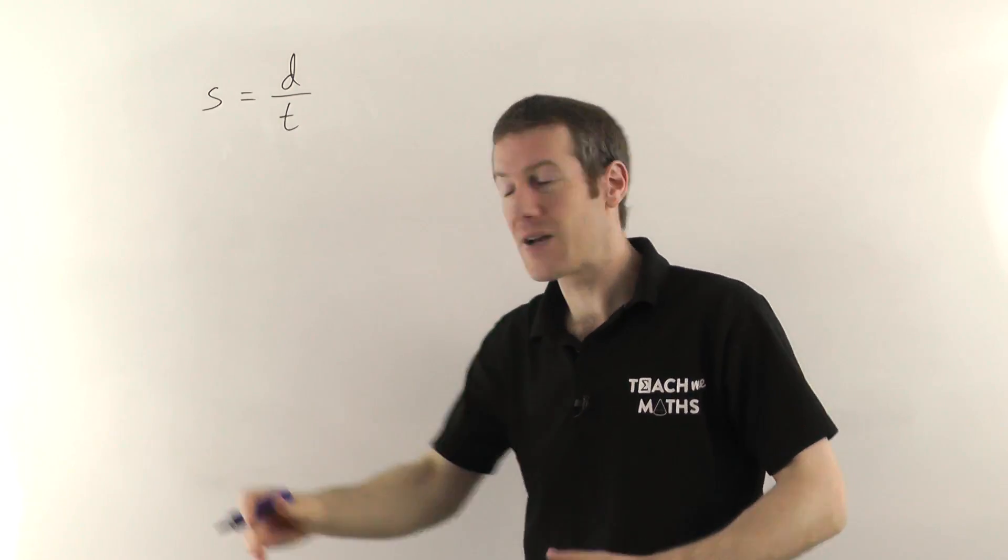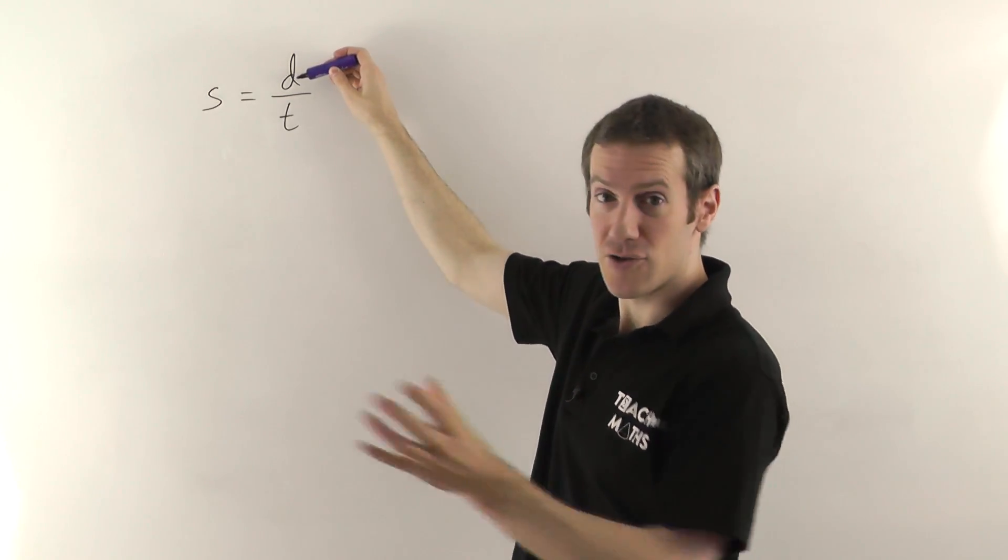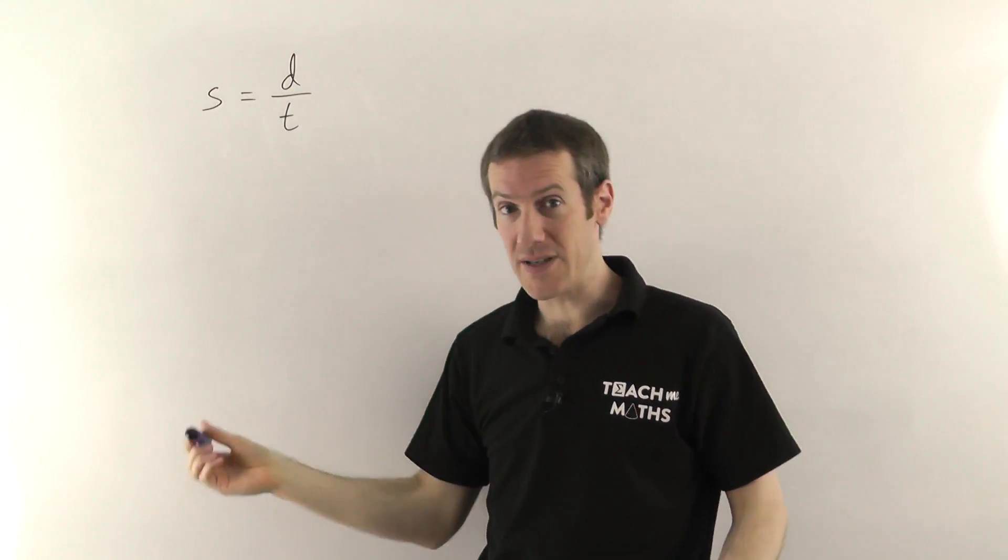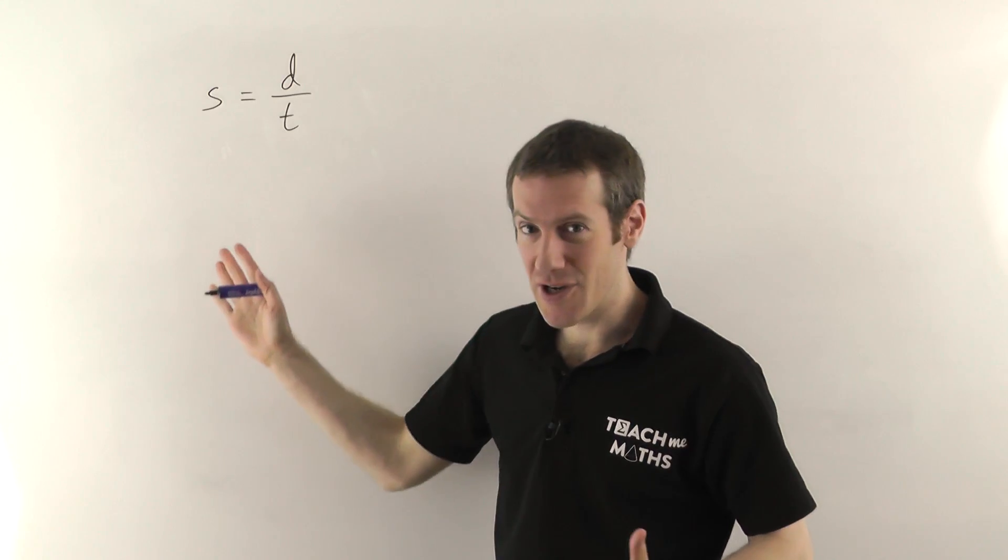So if you have some kind of object traveling a certain distance over a certain time then you can work out the speed. So if it's a car traveling on a road for example, if you know how far the car has traveled and how long it's been traveling for then you can work out the speed.